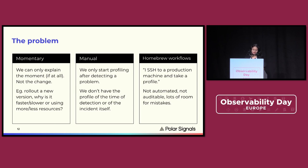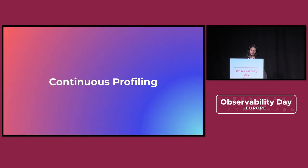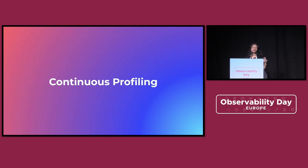That brings me to continuous profiling. Continuous profiling is basically where, like it says, we continuously profile. As the program changes, as a new function is called, as your low-level kernel functions change, we profile that. The profiles that you see change accordingly, so you know in real time what's going on.